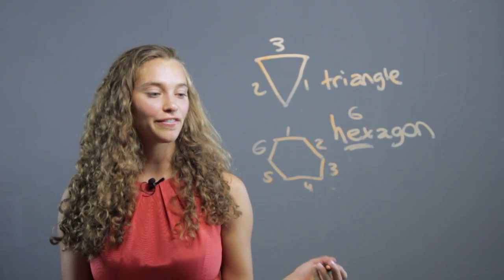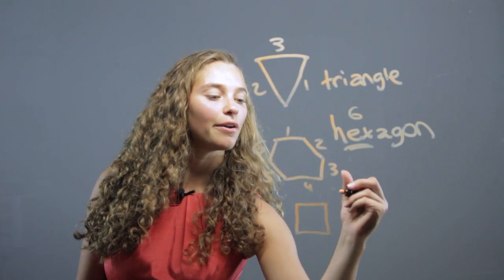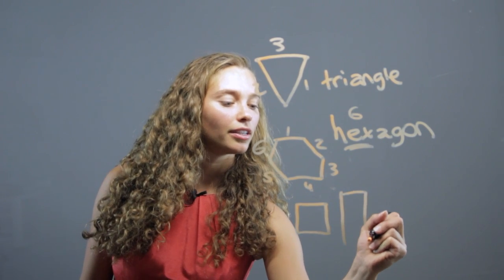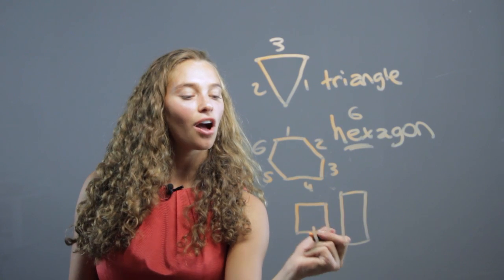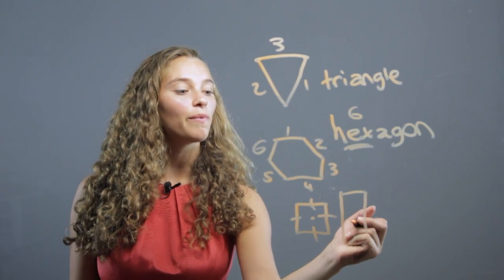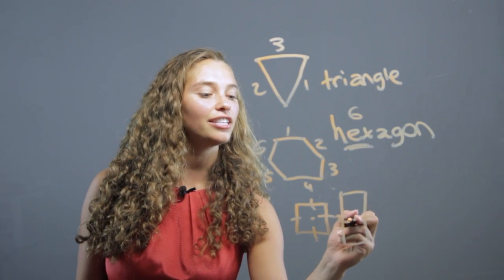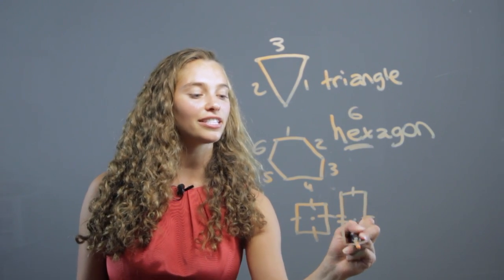You can also talk about the difference between, for example, a square and a rectangle. A square has all equal sides. Everything is equidistant from the center. Whereas a rectangle has different side lengths. These two are longer, whereas these are shorter.